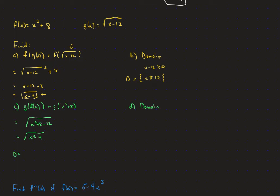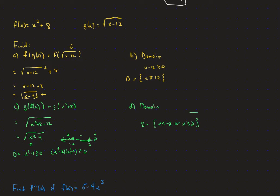The domain requires x² minus 4 ≥ 0. We factor as (x plus 2)(x minus 2) = 0, giving zeros at negative 2 and 2, dividing the number line into three regions. Testing negative 3: negative times negative is positive — in the domain. Testing 0: negative times positive is negative — not in the domain. Testing 3: both factors positive — in the domain. So the domain is x ≤ negative 2 or x ≥ positive 2.